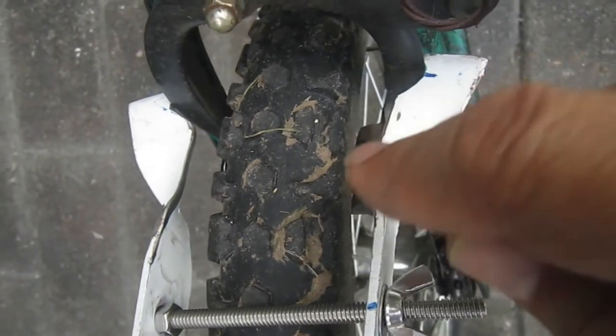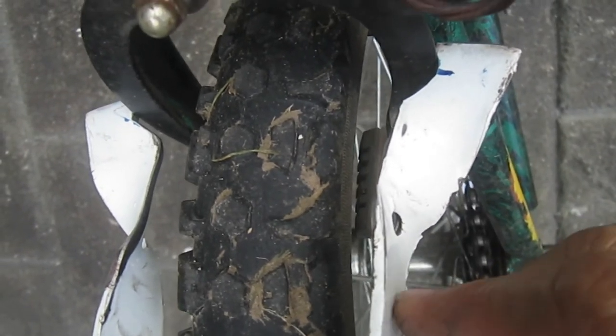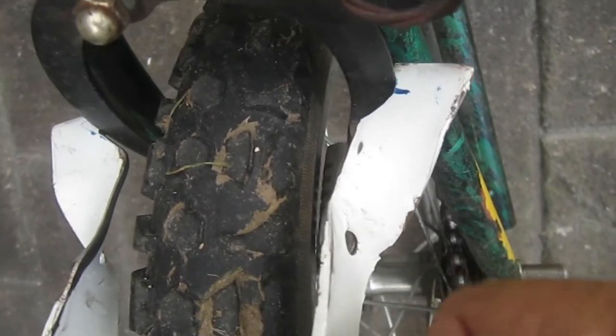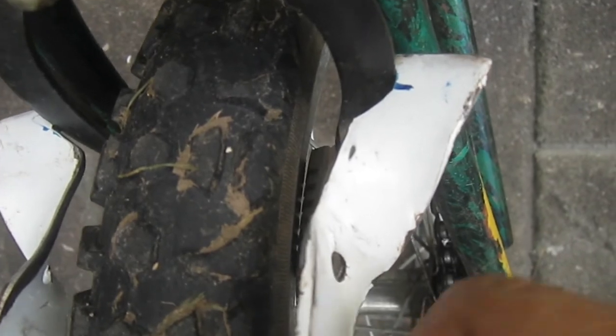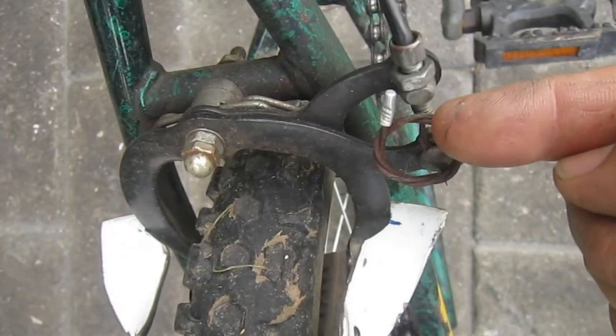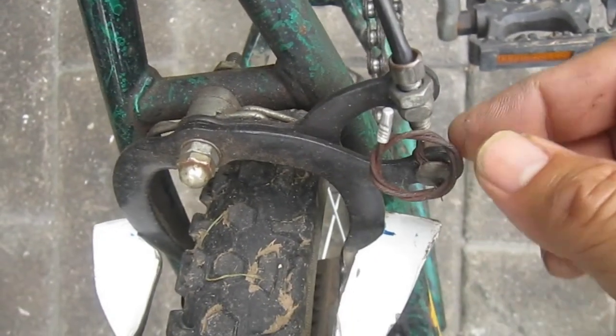And then take a look at the brake shoe. As I turn this, the brake shoe gets closer to the rim. Once you have the distance you want, just loosen the nut here, pull the cable, and then...